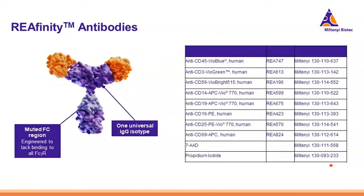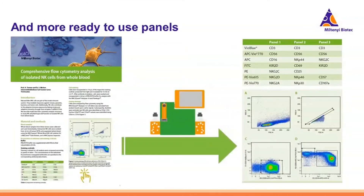These are all REAfinity antibodies. If you are not familiar with them, they have a mutated Fc region so they lack binding to the Fc receptor, meaning no background. There is only one universal IgG isotype needed — you do not need to worry about IgG-1 mouse or IgG-1 rabbit. We also offer ready-to-use panels. For example, if you are interested in analyzing memory-like NK cells, these panels are already established so you do not need to spend time setting them up yourself.